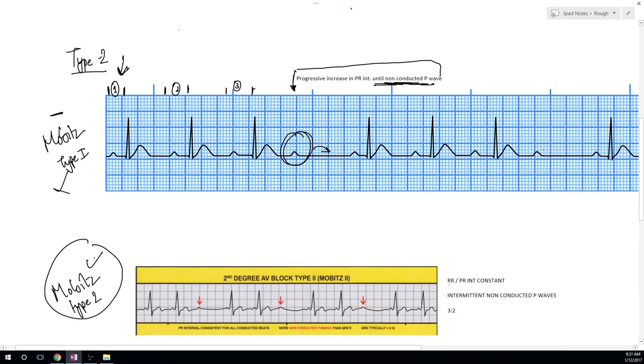In Mobitz type 2, the PR interval is constant, here, here, here, but there is a non-conducted P wave. The P wave is not conducted here, not conducted here, here too. So this is Mobitz type 2. P wave 1, P wave 1, P wave 2 and 3, so out of 3, 2 are conducted. That is 3 to 2 fixed Mobitz type 2 second degree heart block.